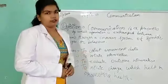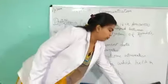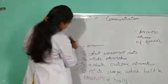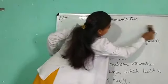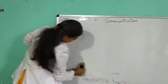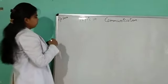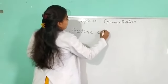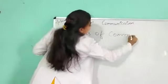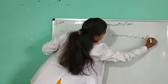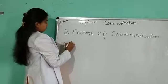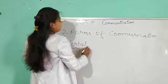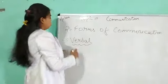What are the forms of communication? There are two forms of communication: first is verbal and second is non-verbal. Verbal — as you know, verbal means to speak.